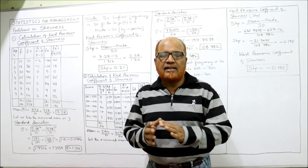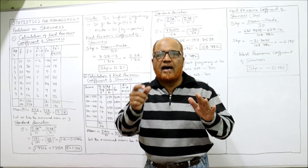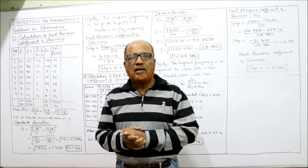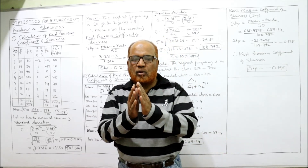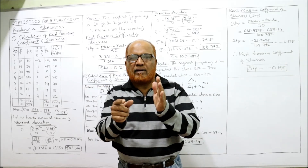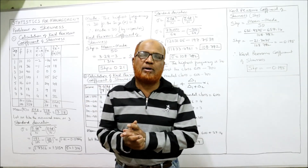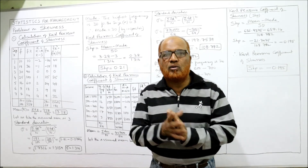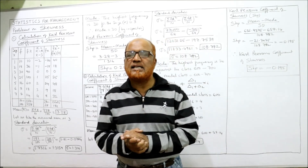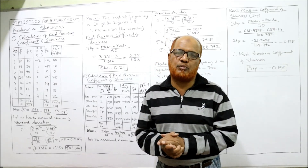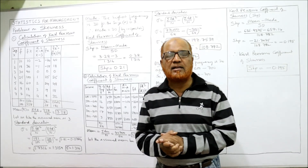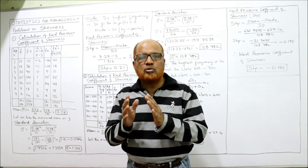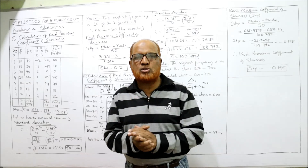When the data is not equally spread around the central value, it is called skewed data. If an equal number of items are on the left and right side of the central value, it is called a symmetrical or normal distribution. Skewness studies the shape or pattern of the distribution, which I explained fully in the last video.